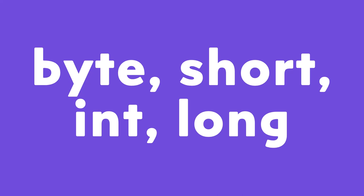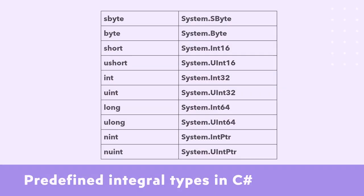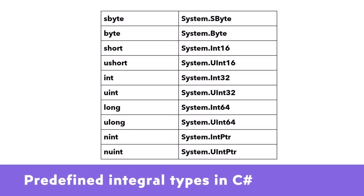Integer is not the only type that holds numbers in C# programming language. There are so many other built-in types in C# to work with numbers — these are bytes, shorts, integers, and longs. All of these types also have multiple variants. Let's understand all of them and the differences between them.